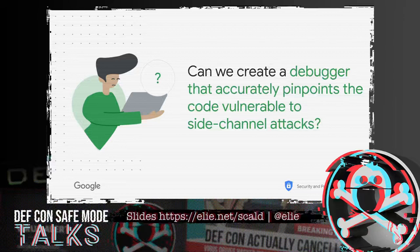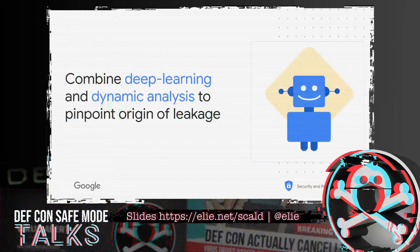Our idea was to develop new technology to accurately pinpoint the code which is vulnerable to side-channel attacks, so developers can quickly isolate it and try to improve the quality of the implementation and be more resilient to side-channel attacks. We proposed to use deep learning and dynamic analysis combined to accurately pinpoint the origin of the leakage which is exploited by a given side-channel attack.